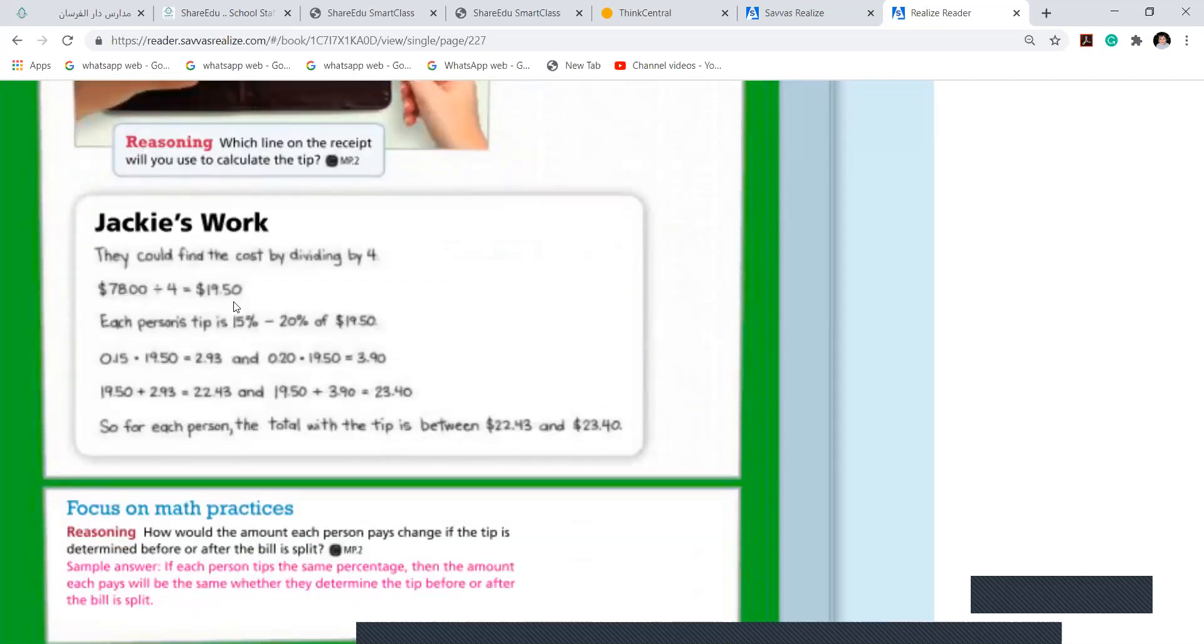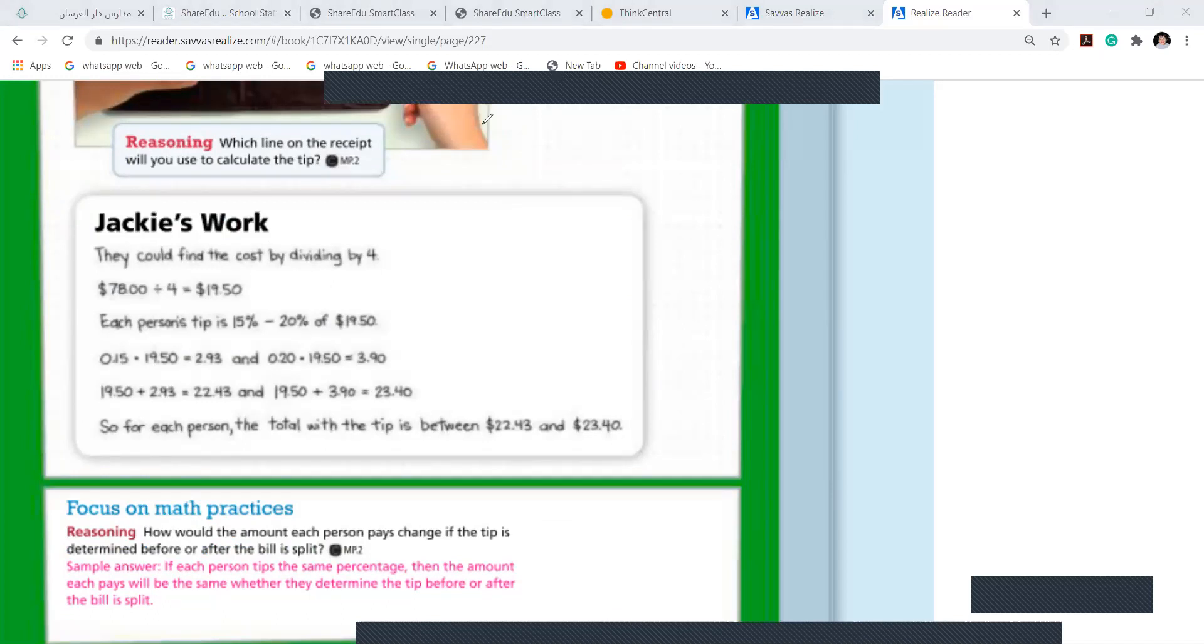When they divide that into four, they got $19.50. So each person's tip, they want to give 15%. They multiply 15 to $19.50. First of all, 15%. When I say 15% of the tip, what does this percentage mean? Did you all do any percentage problem in your life before? What does this percentage mean? That means whenever you see this percentage sign.